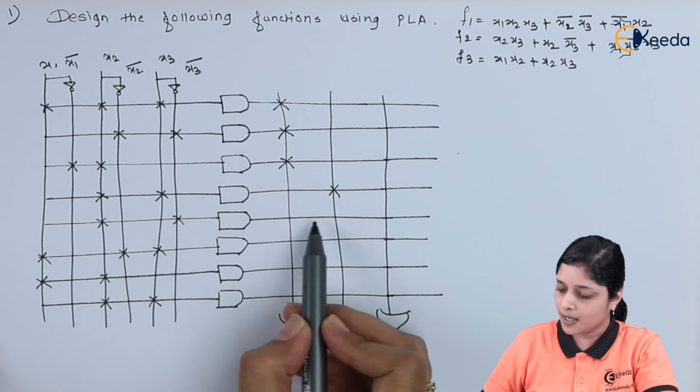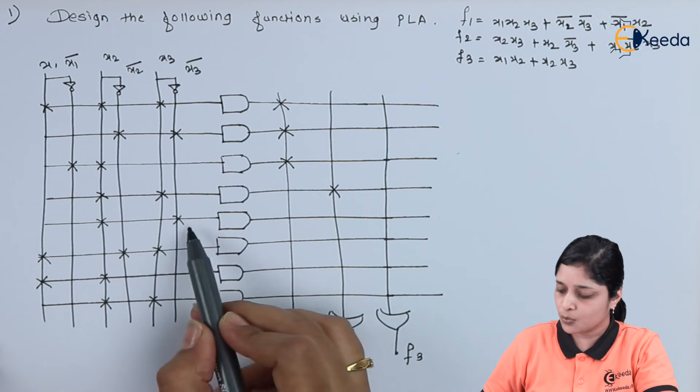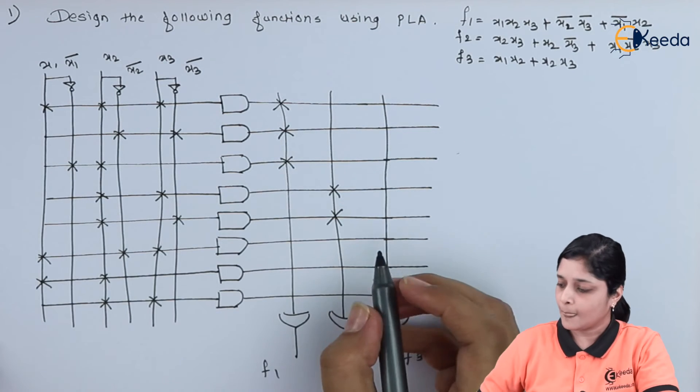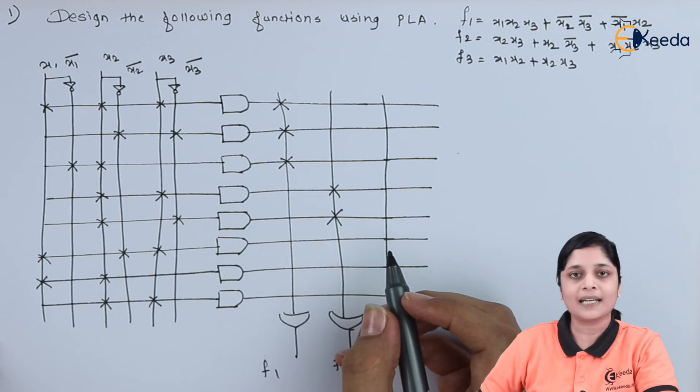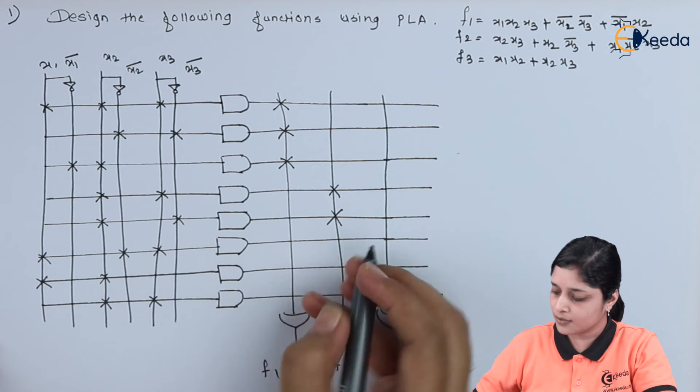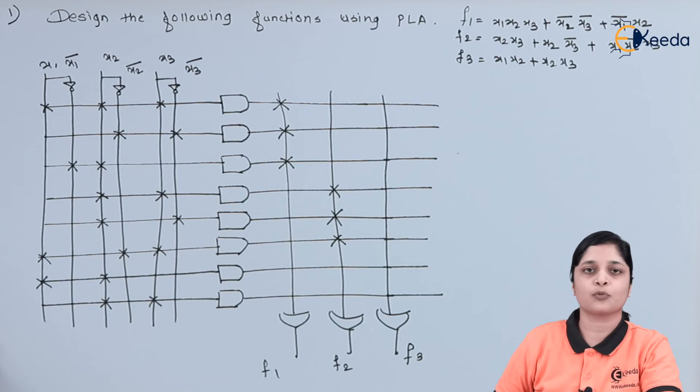Then, X2, X3 bar. For this AND gate, we have X2, X3 bar. So, we will make for F2. And then, X1, X2 bar, X3. So, we have X1, X2 bar, X3. Again, we want this output.